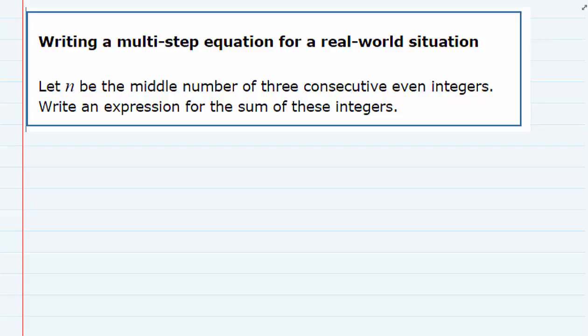We're writing an equation in this example. We're told to let n be the middle number of three consecutive even integers. Write an expression for the sum of these integers.